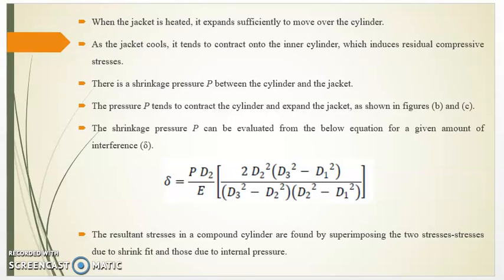The shrinkage pressure P can be evaluated for a given amount of interference delta as: delta = (P × D2 / E) × [2D2² × (D3² − D1²)] / (D3² − D1²), where E is Young's modulus. The resultant stresses in a compound cylinder are found by superimposing two stress states: stresses due to shrink fit, and those due to internal pressure.